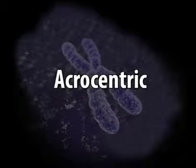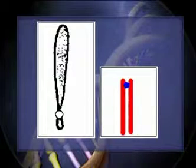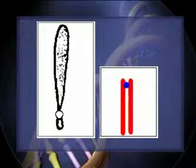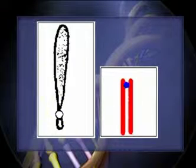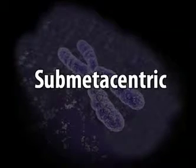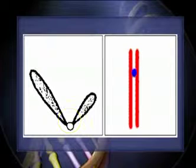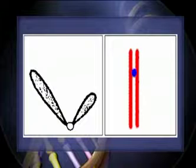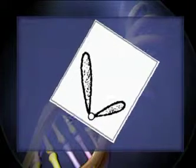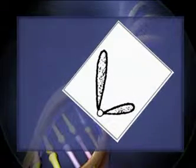Acrocentric chromosomes: when the centromere is situated near one end, forming a long arm and a very short or even imperceptible short arm, the chromosome appears rod-shaped. Submetacentric chromosomes: when the centromere is situated slightly away from the middle, one arm of the chromosome will be shorter than the other, and such a chromosome will appear L-shaped during anaphase movement.